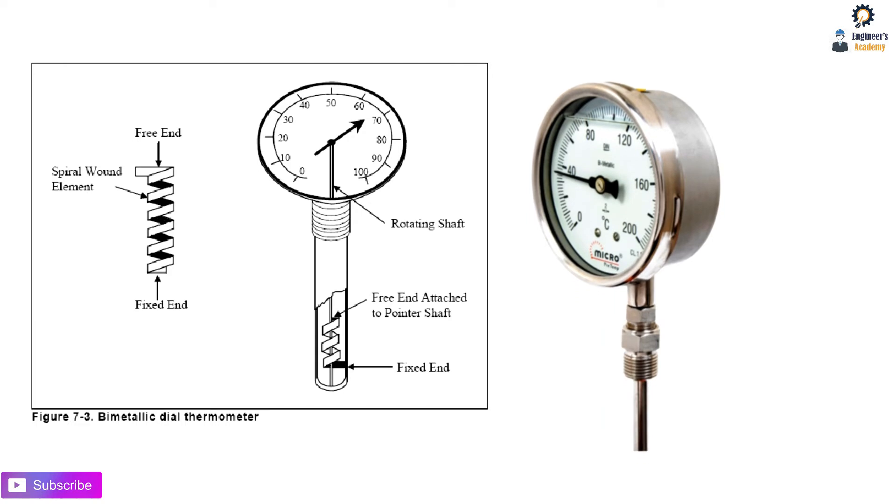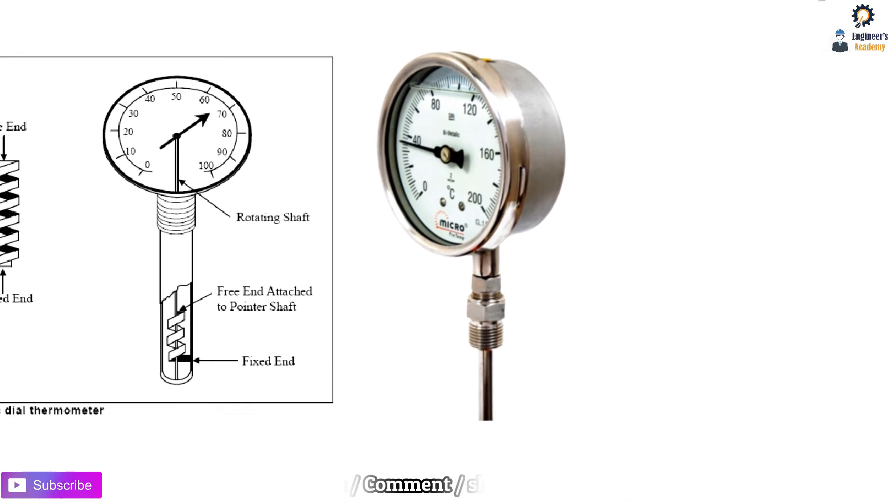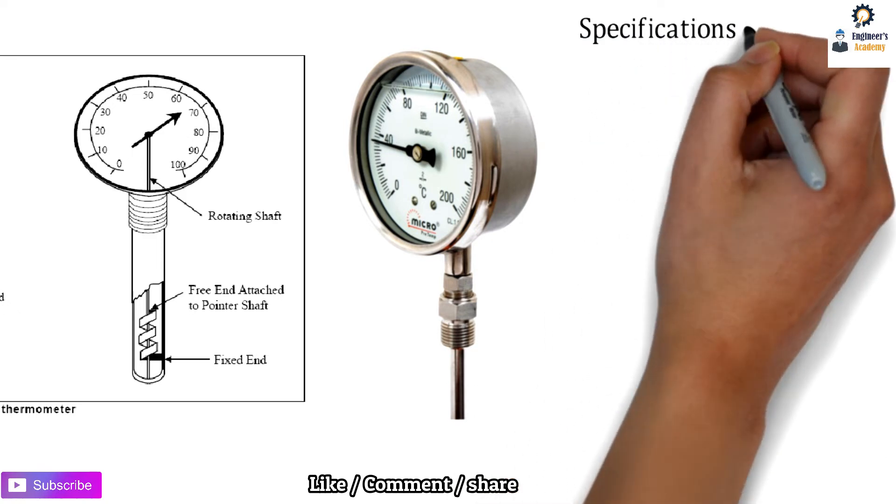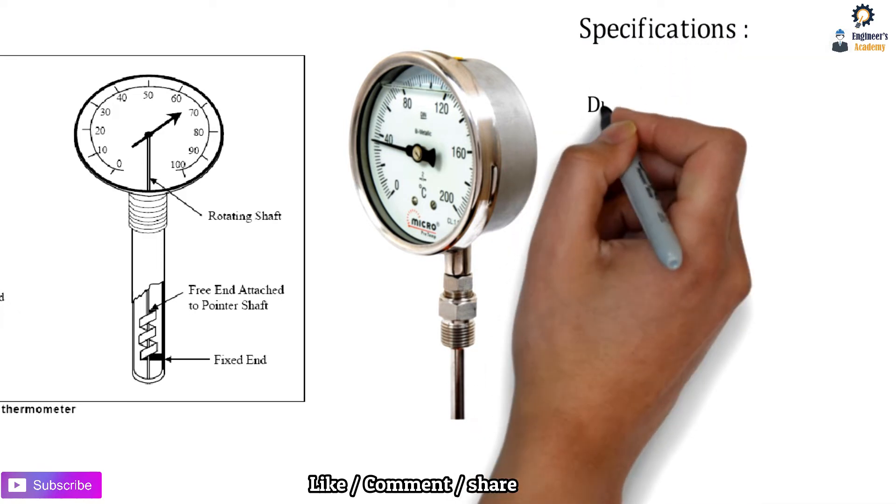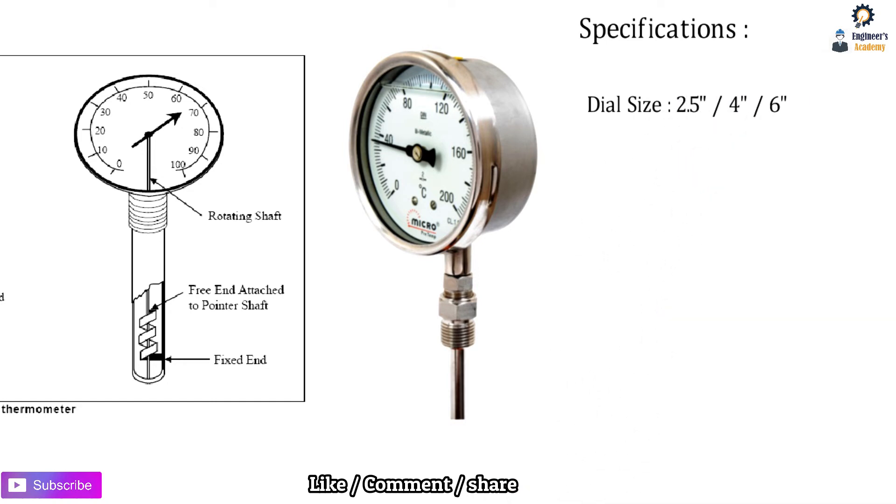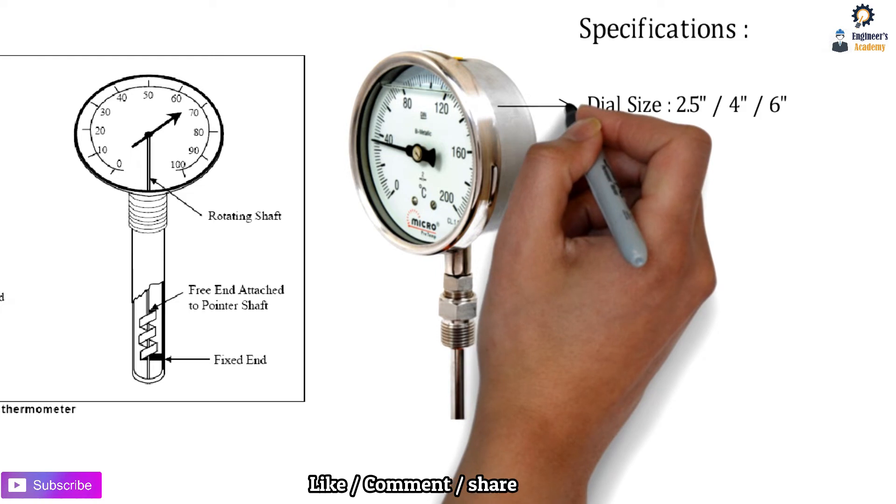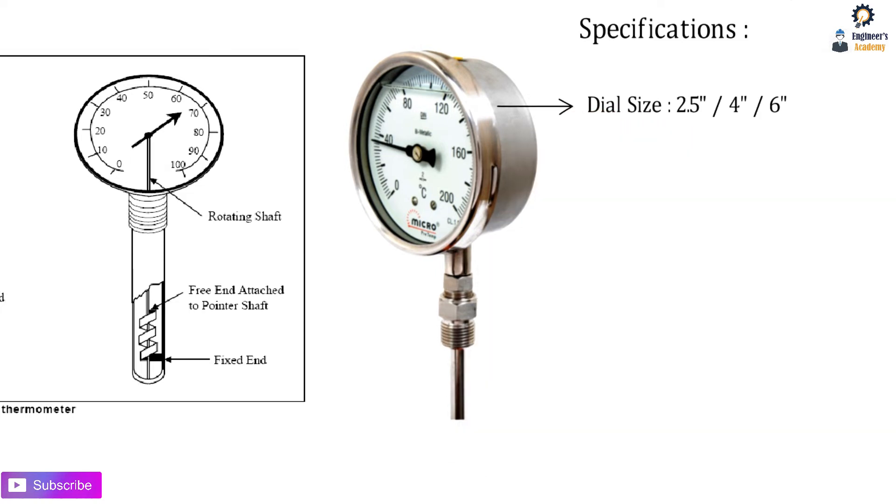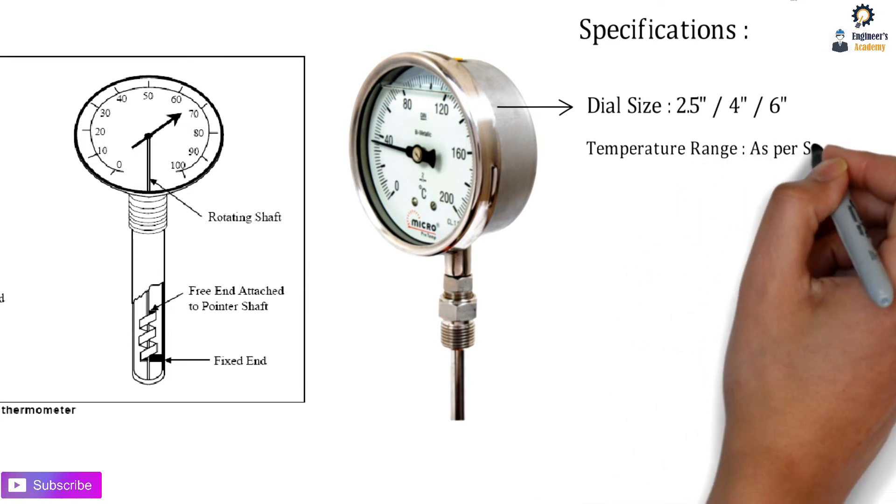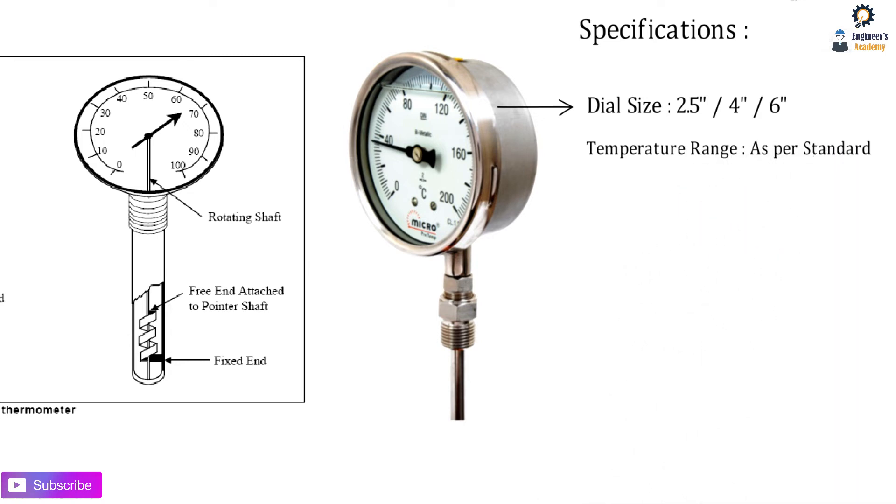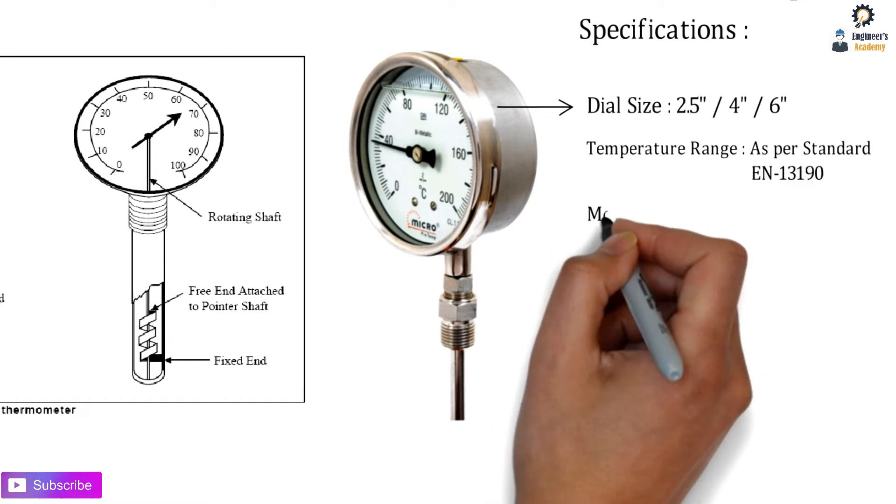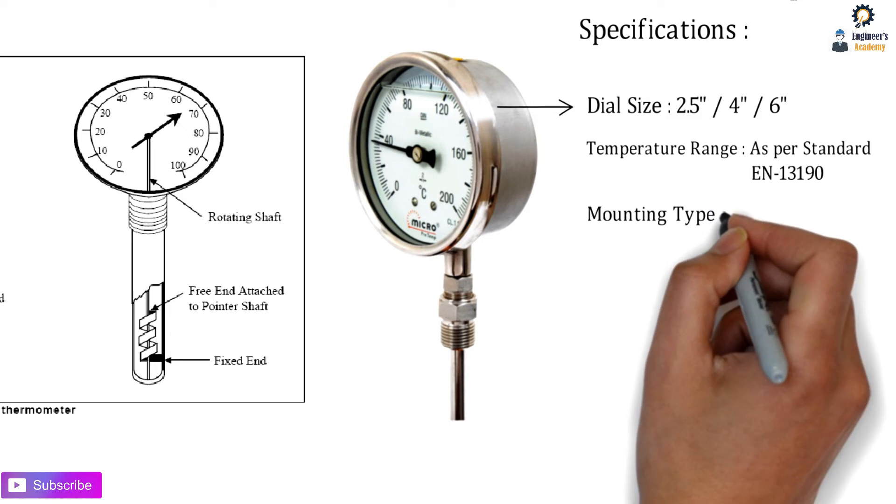Let's check out the specifications. First is the dial size - as we've seen in pressure gauges, it can be 2.5 inch, 4 inch, or 6 inches. The temperature range is as per standard EN 13190.